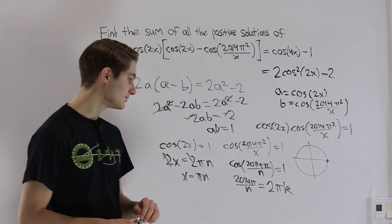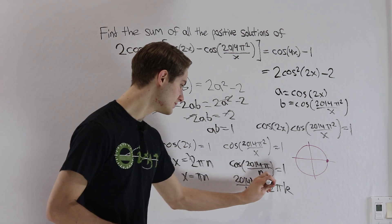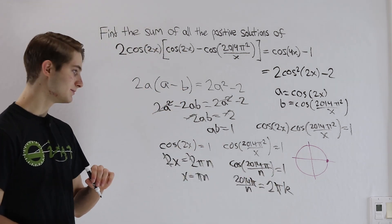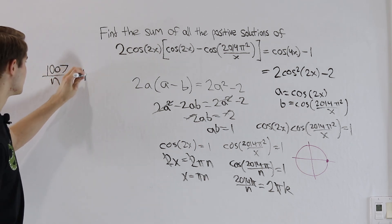Now in this case if we simplify, we know the π's are going to cancel out, so we can get rid of those. And then if we divide by 2 on both sides, 2014 is going to turn into 1007. So we get 1007 over n is equal to k.